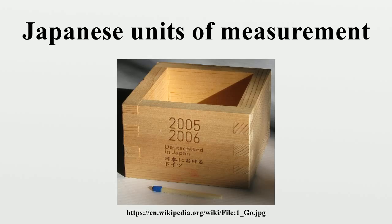The Japanese version of the Tom Thumb story, Isshunboshi, literally '1 sun boy,' as well as many Japanese proverbs, also reference these units. The Shosoin in Nara has ivory 1-shaku rulers, the Kogiba Chiruno shaku.